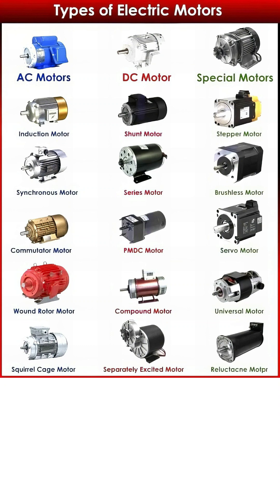The servo motor is part of a closed loop system providing extremely precise control over position, velocity, and acceleration in applications like industrial automation. The versatile universal motor can uniquely run on either AC or DC power, and the reluctance motor operates on the principle of magnetic reluctance without windings on its rotor.